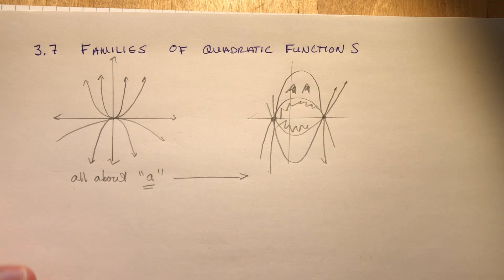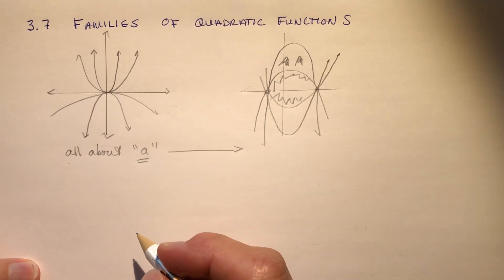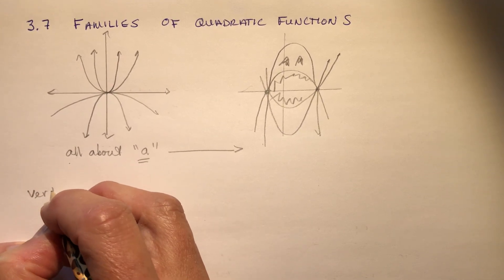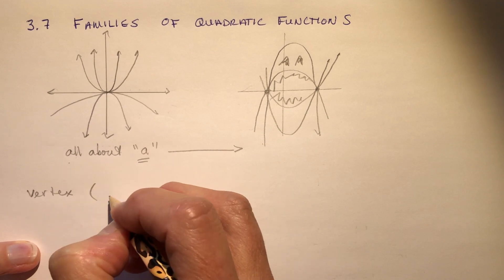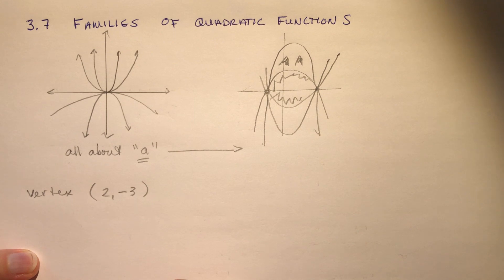Now your job in this section is to find the equation of a parabola in maybe vertex form or in factored form if I gave you the zeros and another point. So let's make up our own examples. Let's just make something up. So let's say I had a vertex of, let's use two and minus three. And in order for me to tell you the shape of this parabola, I would need to know something else.